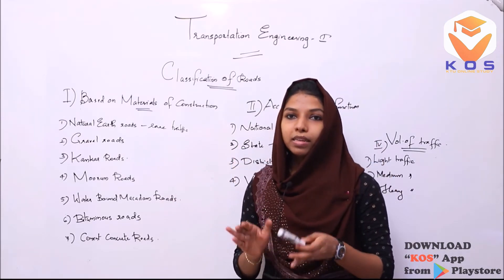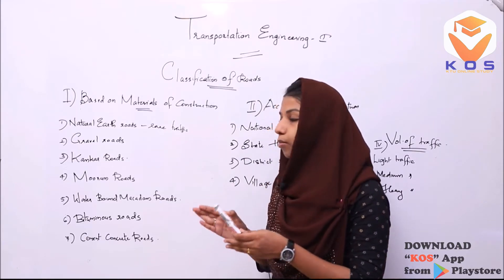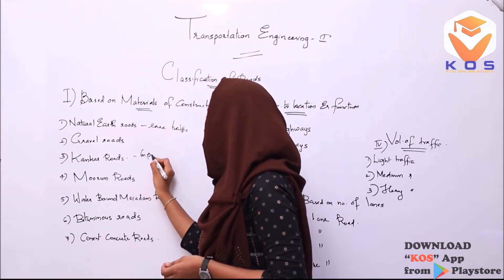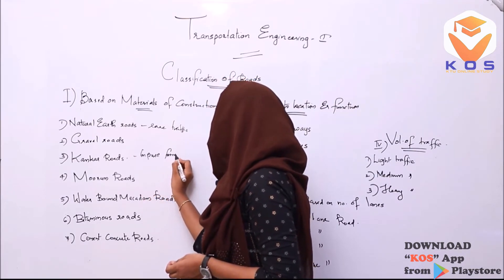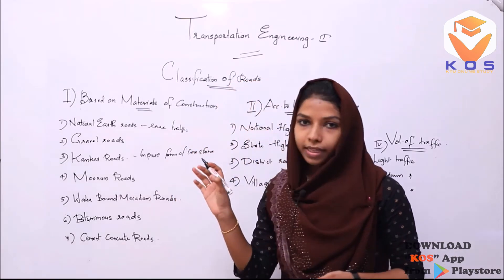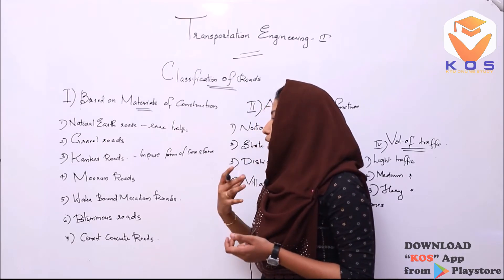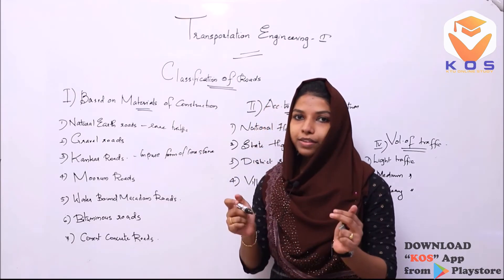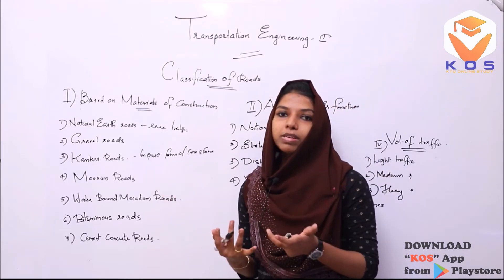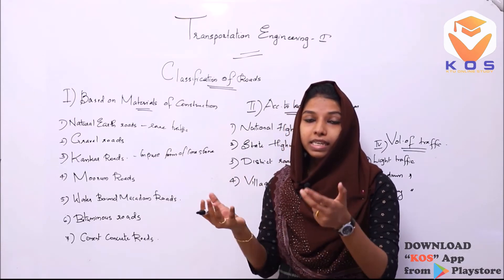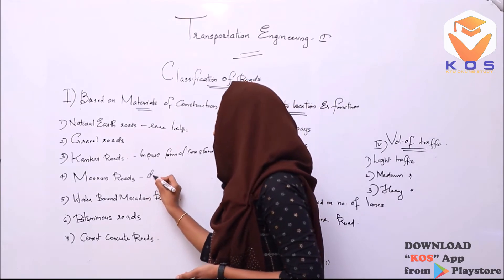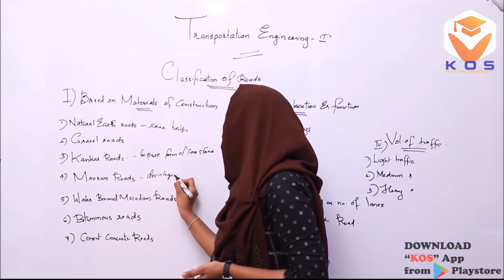The second type under materials is gravel roads. Gravel is the impure form of limestone, and it also comes from the disintegration of igneous rock.